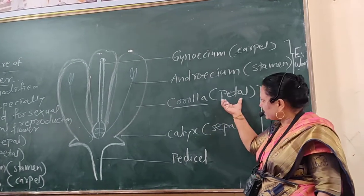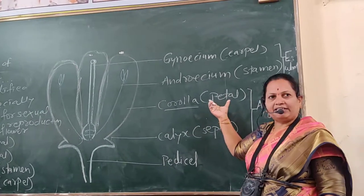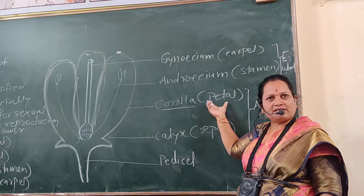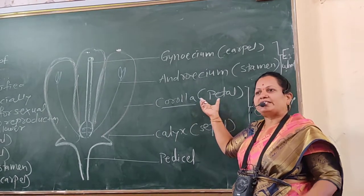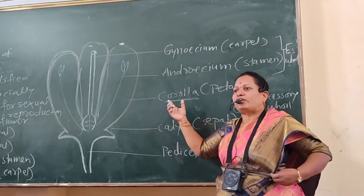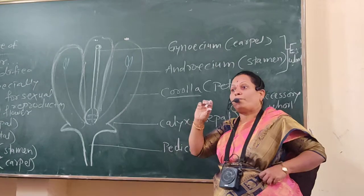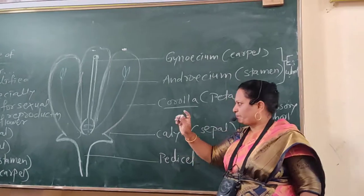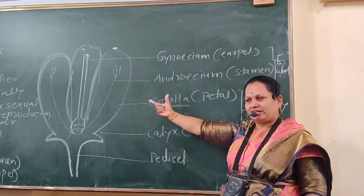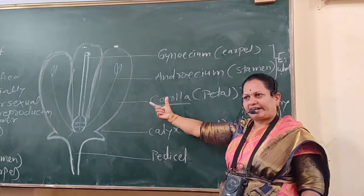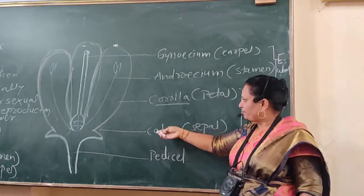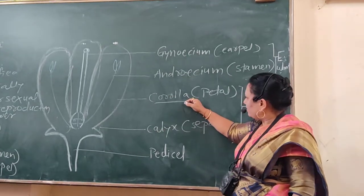When petals are free, that condition is called polypetalous, and when petals are united, that condition is called gamopetalous. In some flowers, the corolla is bright in color to attract insects for pollination.